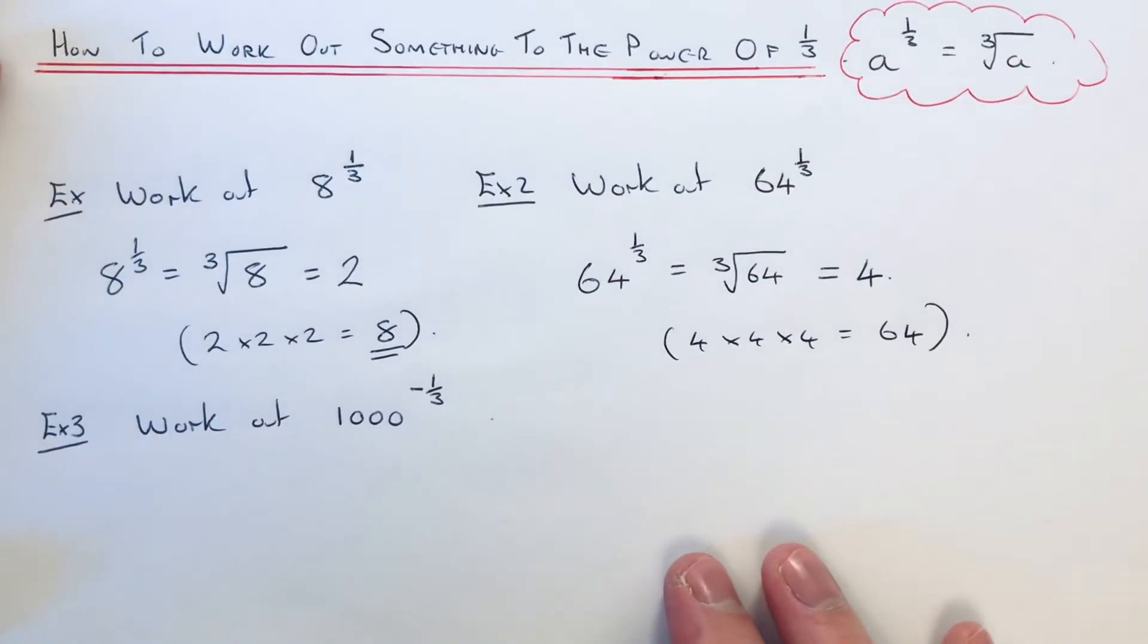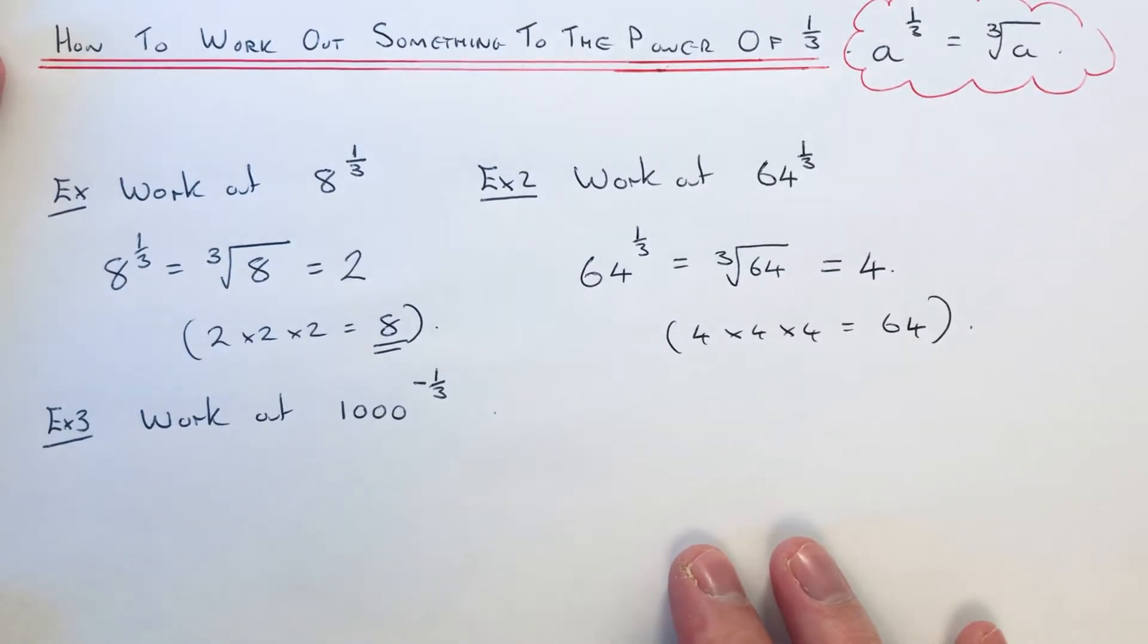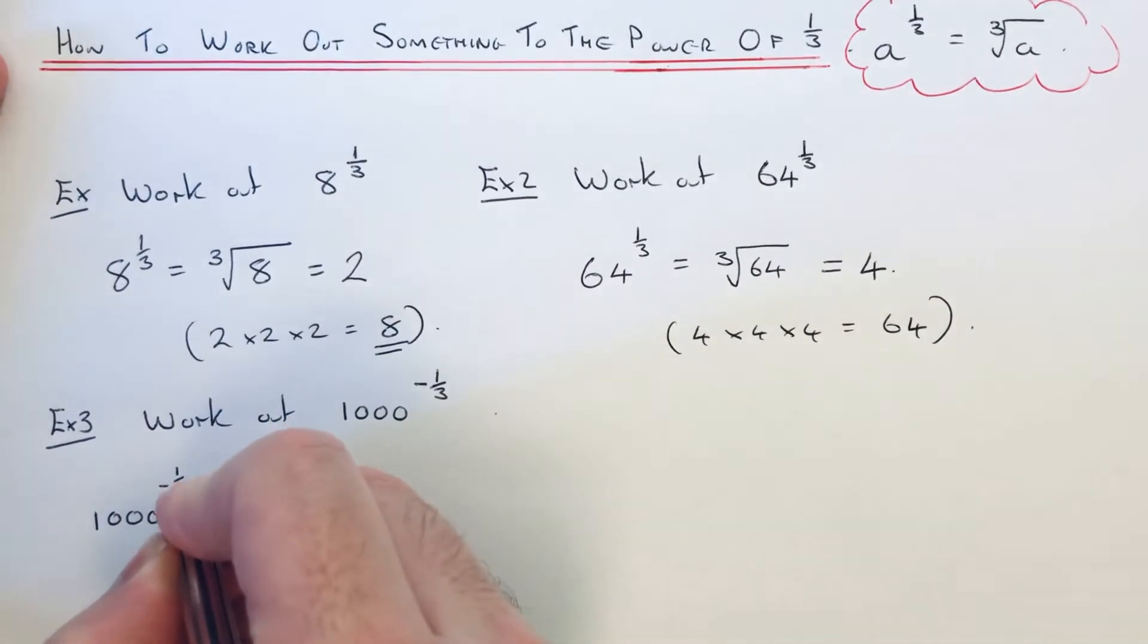So the final example we've got to work out 1000 to the power of minus one third. So this time we've got a negative power.